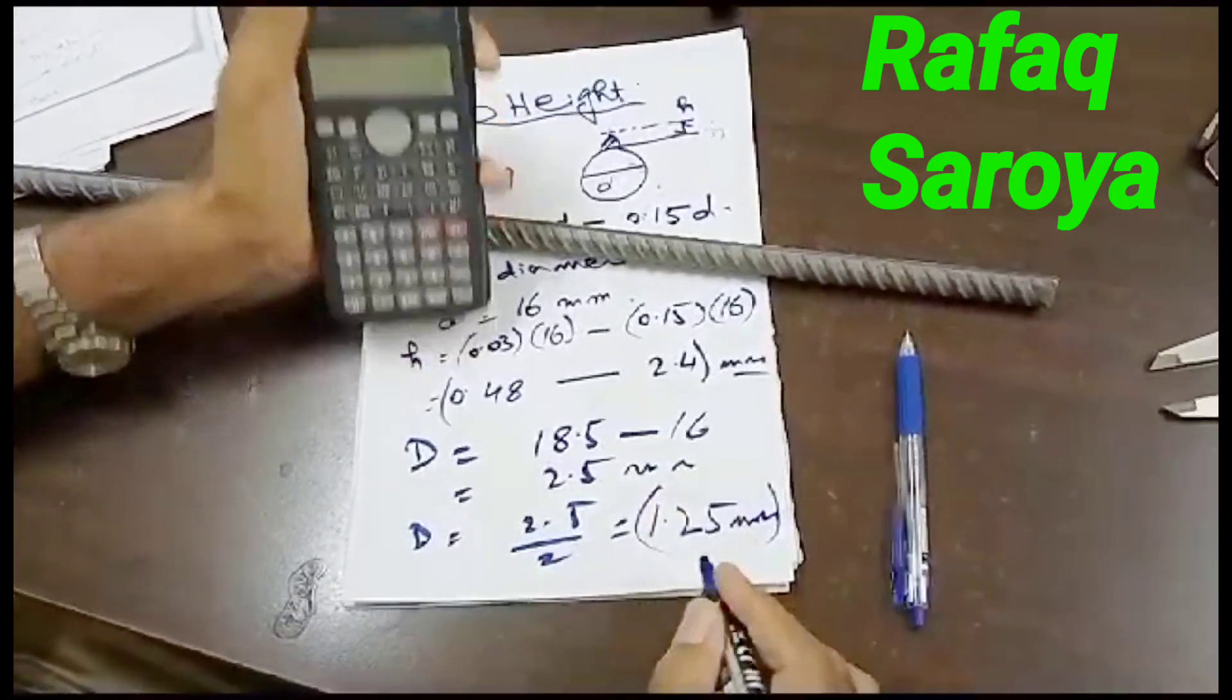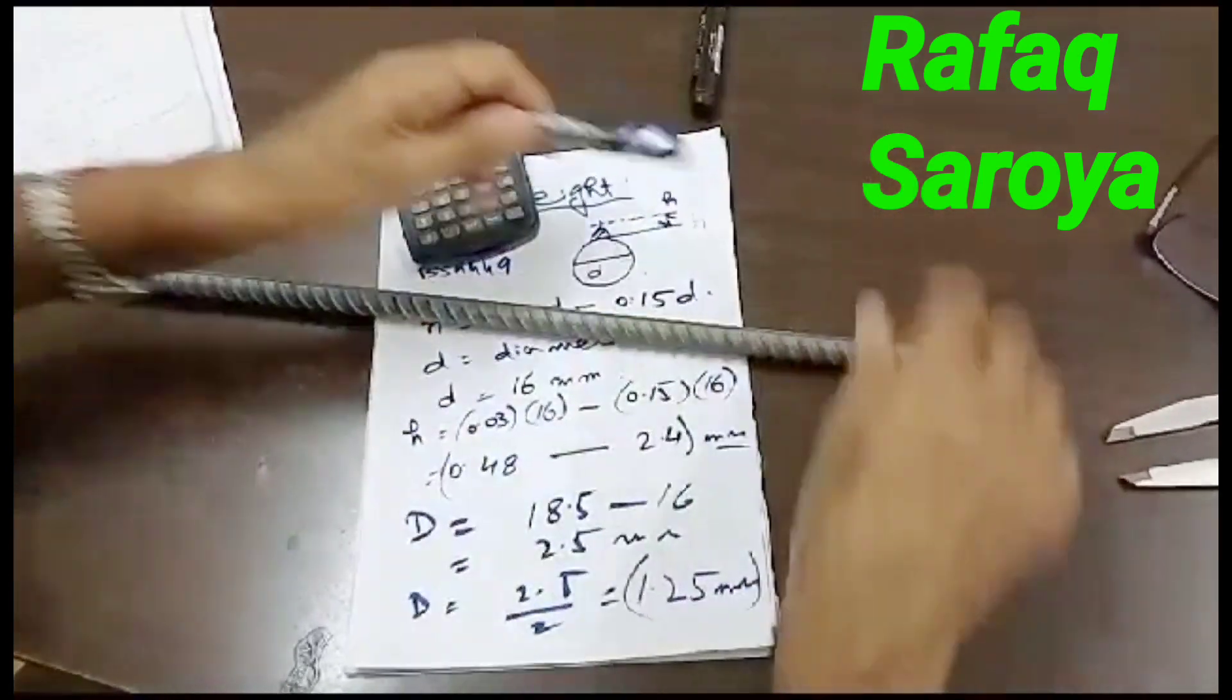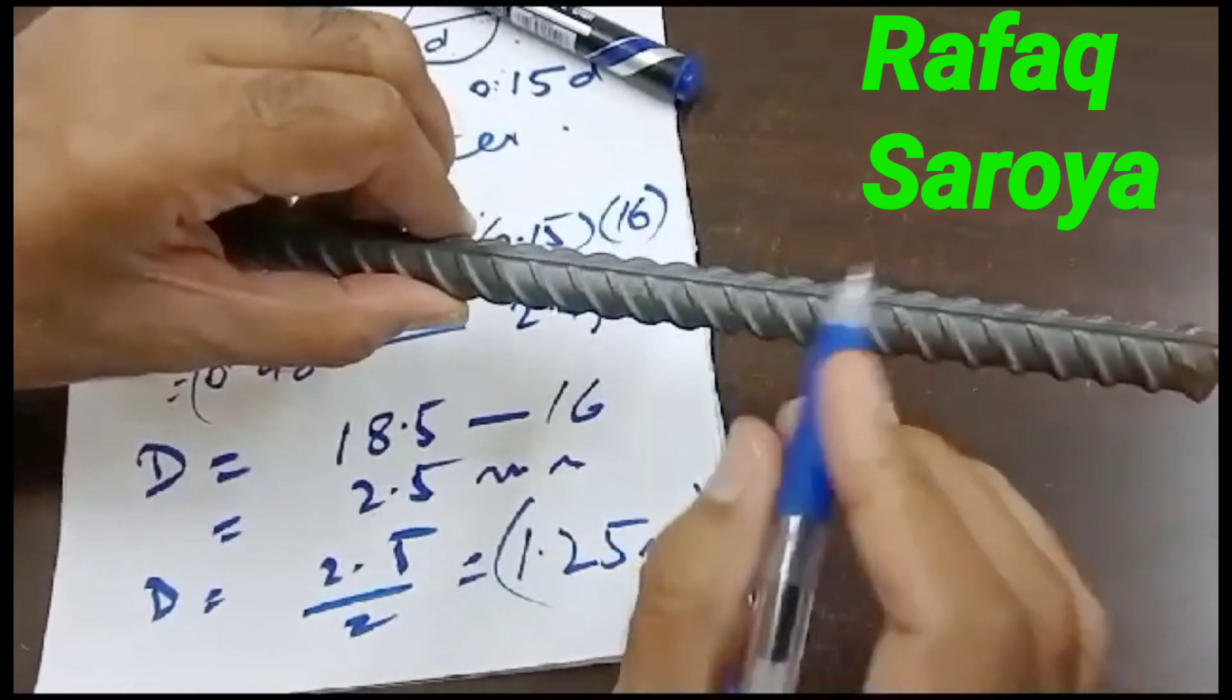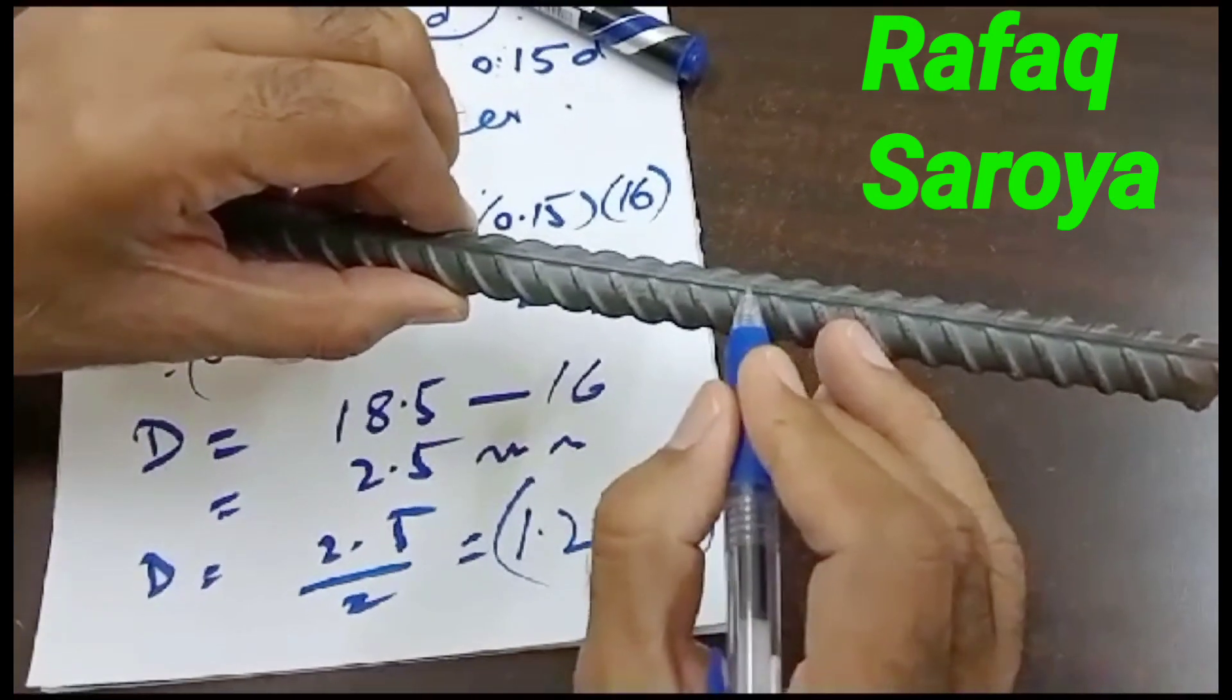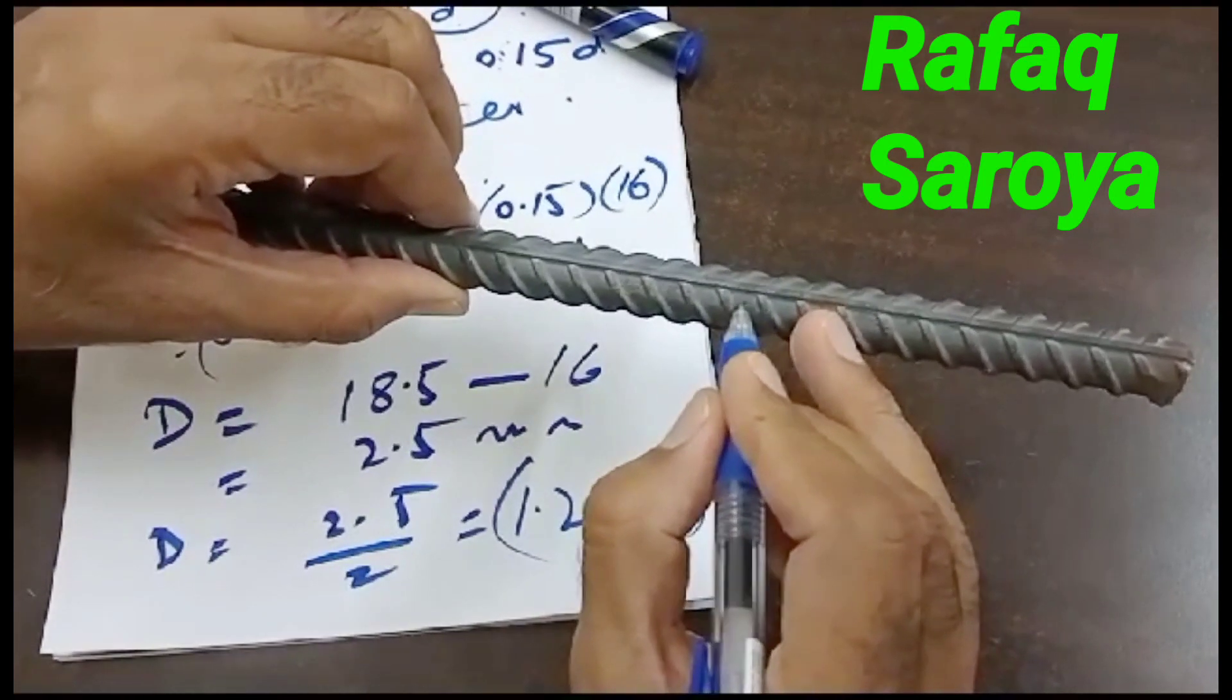So I can say that, just for your understanding, that this rib is at 1.25mm height from the core. This is the rib height, and it is at a height of 1.25mm from the core.